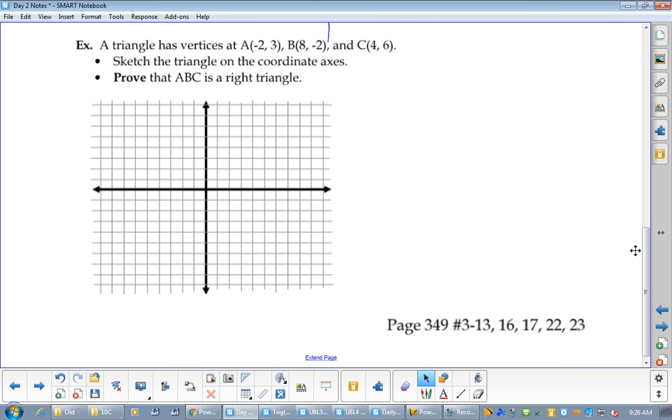Okay, a triangle has vertices at A(-2, 3), let's put them in. Negative two, three would be there. B is eight - one, two, three, four, five, six, seven, eight, negative two. And C is one, two, three, four, five, six. C is (4, 6). Okay, so we have ourselves a triangle. Let's do some line drawing.